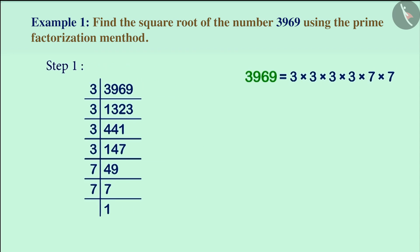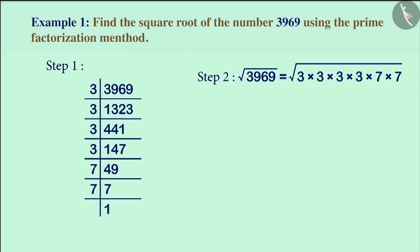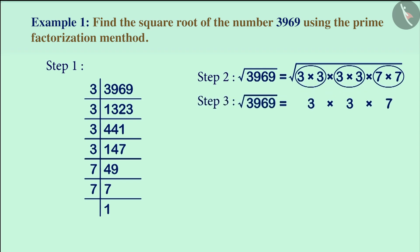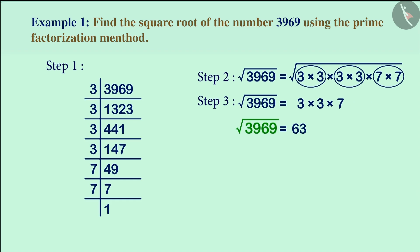Now, we will express the number 3969 as the product of its prime factors. After this, we will group the prime factors into pairs. Then, we will take one factor out of each pair and multiply them. This product is the square root of that number. That is, the number 63 is the square root of the number 3969.